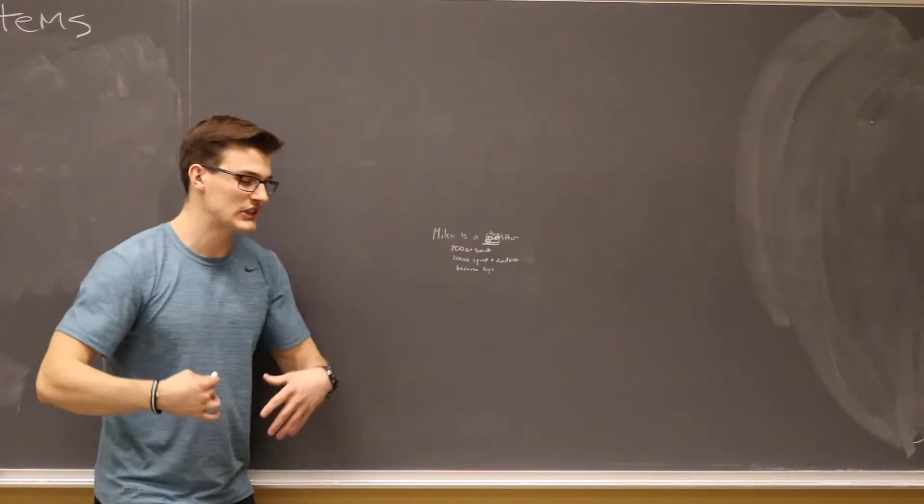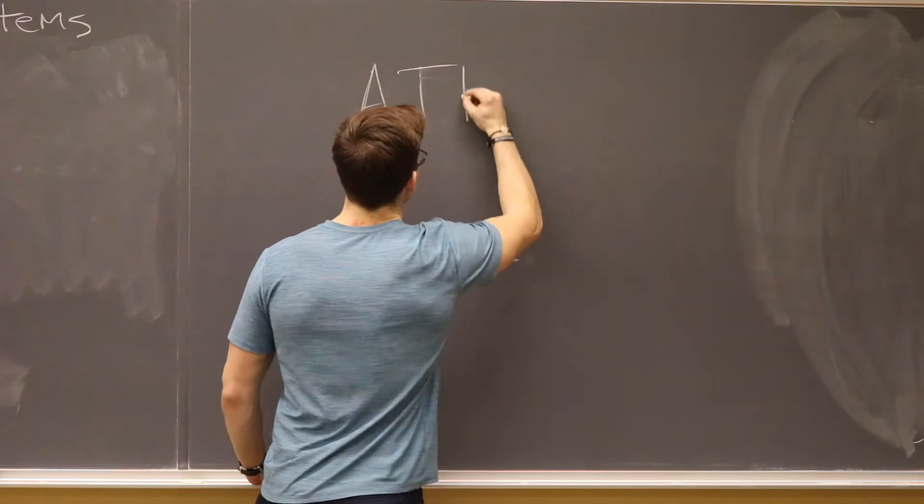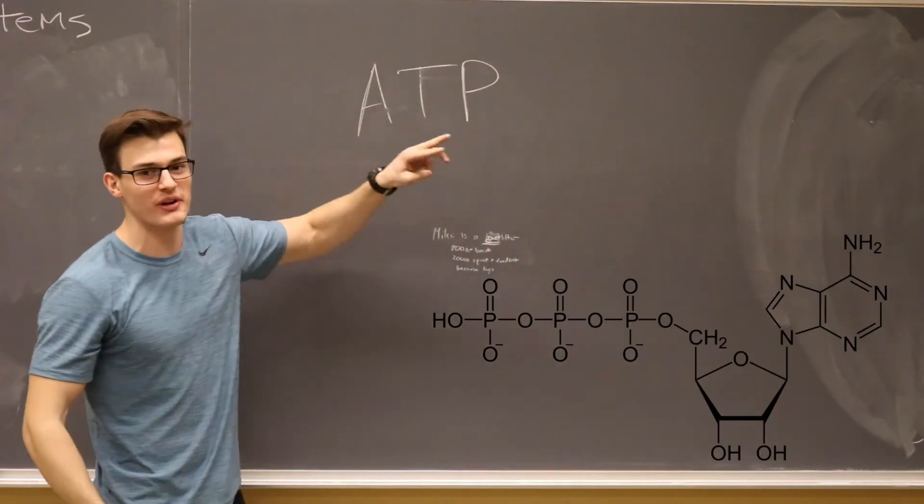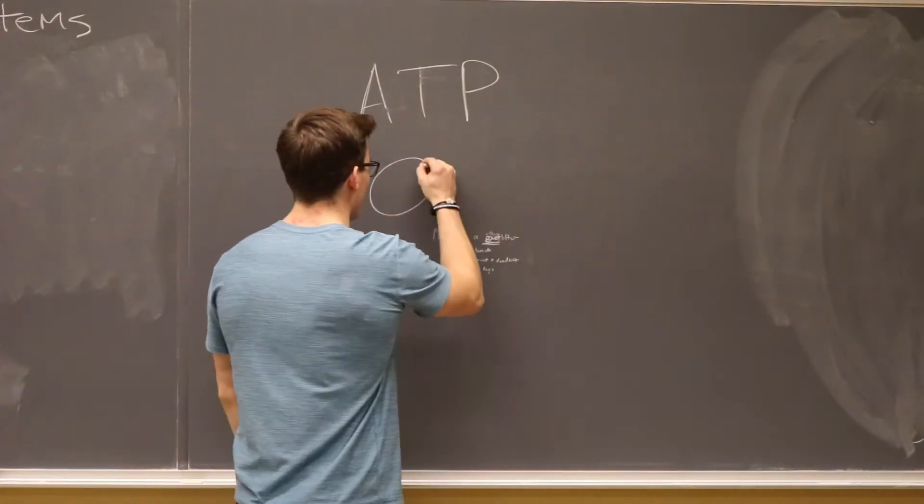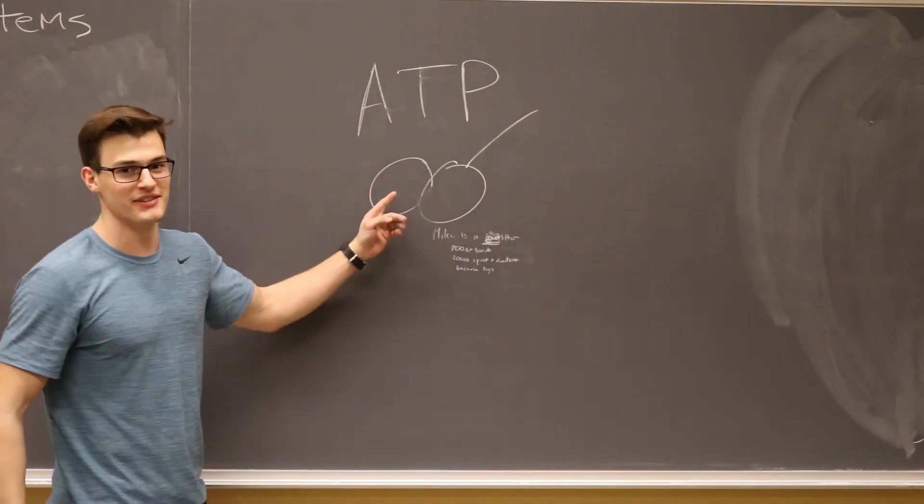Alright, now before we talk about energy or anything else, we need to talk about something called ATP. Adenosine triphosphate—three phosphate groups, adenine. Don't even know what that means. Essentially it looks like two boobs in a line. ATP, you need it.